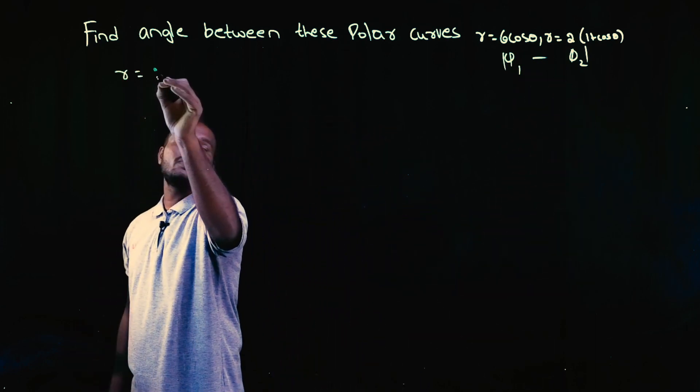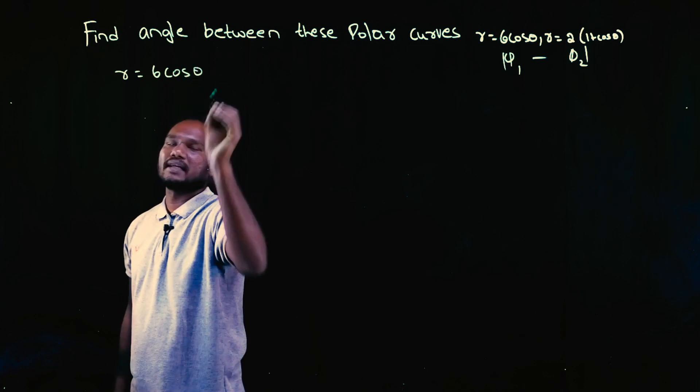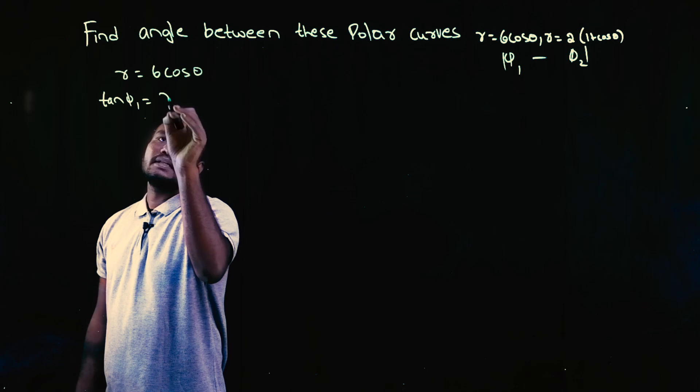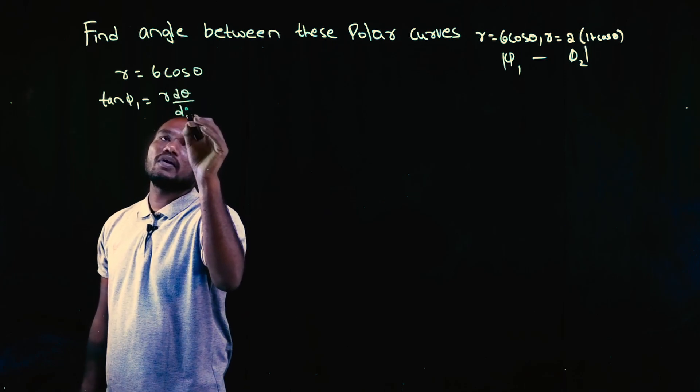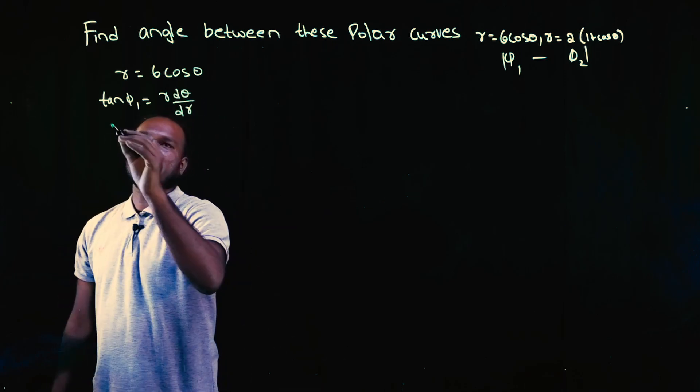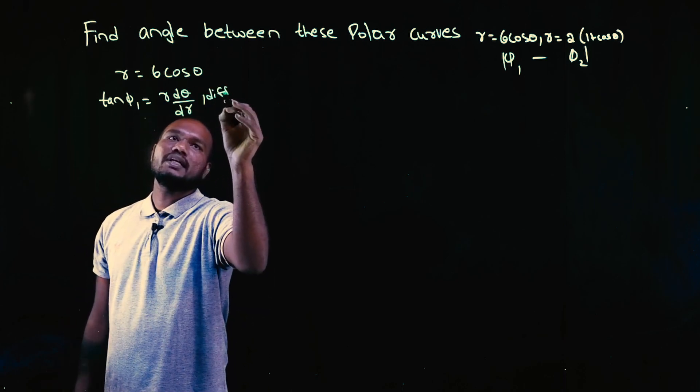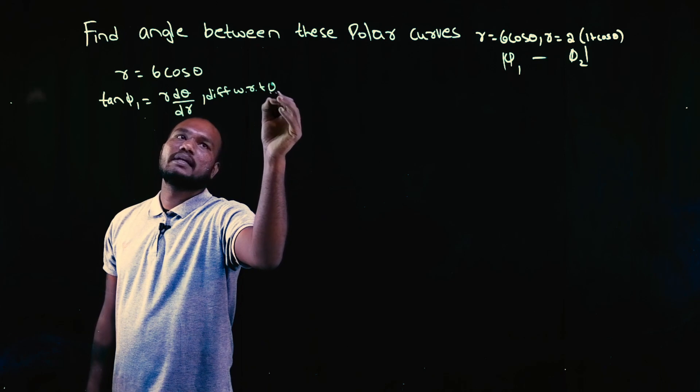Let's take the first curve. R is equal to 6 cos θ. To find φ1, we have to find tan φ1, that is R into dθ upon dr. So, tan φ is equal to R. R1 is given when dθ by dr is not given. So, let's differentiate with respect to θ.